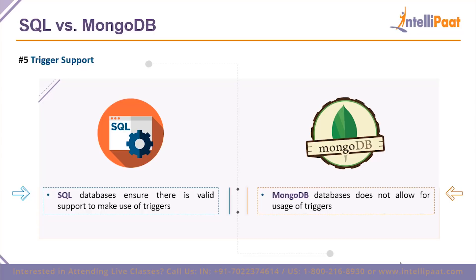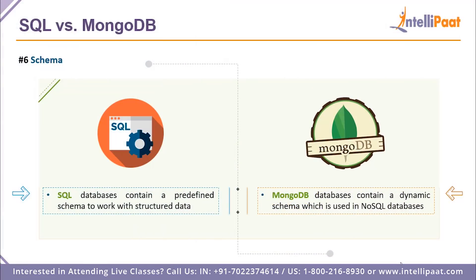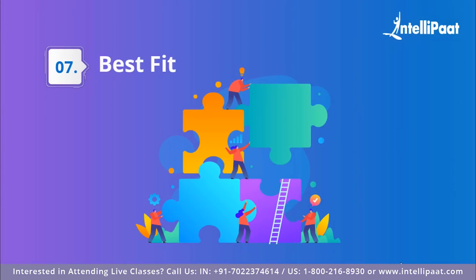Point five is trigger support. SQL ensures valid support for triggers, which are a special type of stored procedure that automatically runs whenever an event occurs on the SQL server. These triggers run a procedure that is already compiled and ready to execute. MongoDB does not allow the flexibility of using stored procedures and triggers. Point six is schema — SQL databases contain a predefined schema for structured data, while MongoDB uses a dynamic schema, which has become the gold standard for large NoSQL databases.